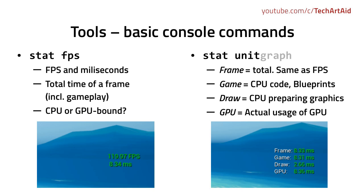Frame is the same as with FPS — the final cost. Game is the gameplay code, the work of the CPU on gameplay. Draw is the work on the CPU to prepare data for the GPU, including things like occlusion culling, which is hiding invisible objects for optimization. And GPU is the raw time it took to render a frame on the GPU.